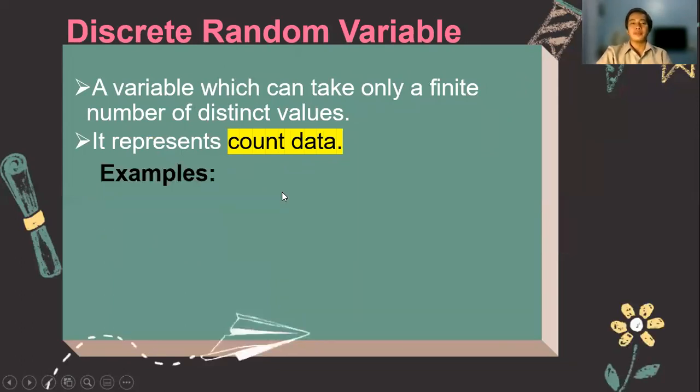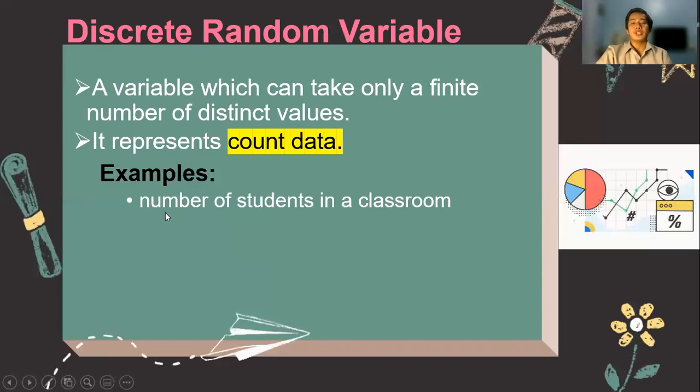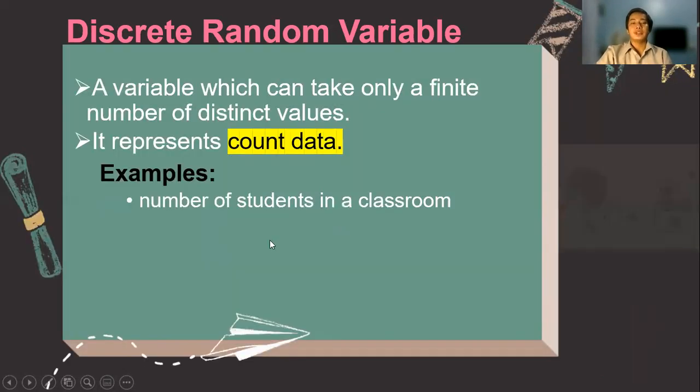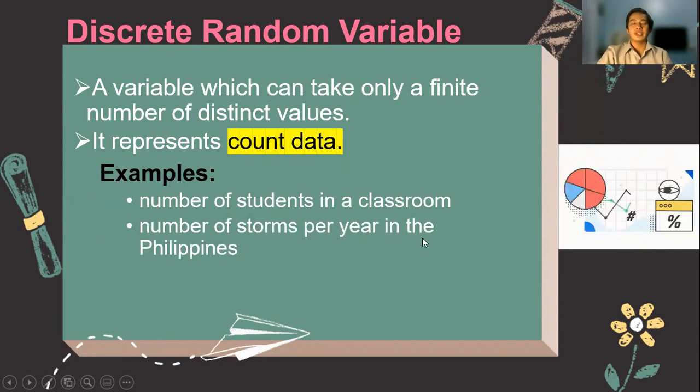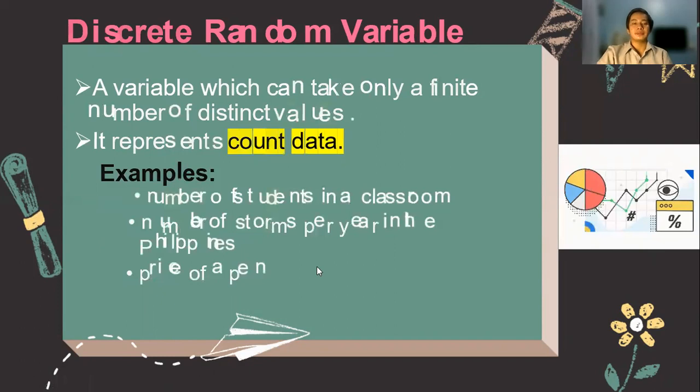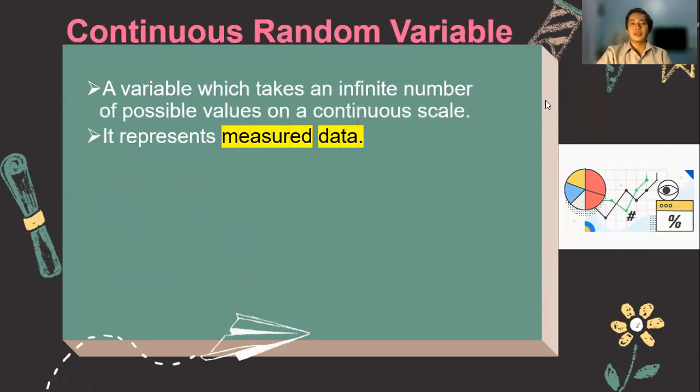Let's have examples. So the number of students in a classroom could be counted. The number of storms per year in the Philippines, price of 10, and so on. So notice that for discrete random variables, they are whole numbers.